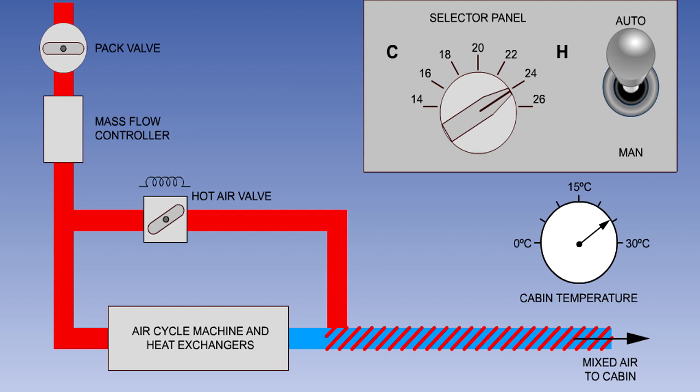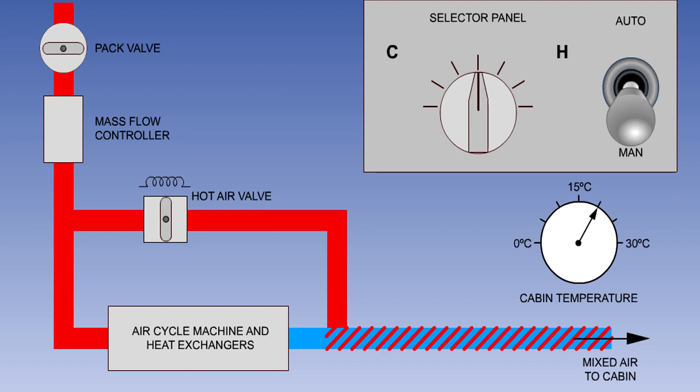If the manual auto switch is moved to the manual position, the hot air valve will now move in direct response to the temperature selector switch position, and remain in the selected position. The pilot is now no longer selecting a temperature. Instead, he is selecting the amount of hot air to be added. The cabin temperature achieved will vary with the environmental conditions.